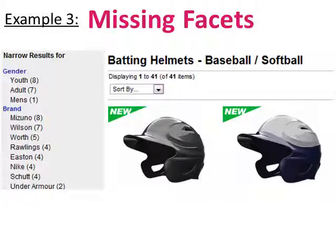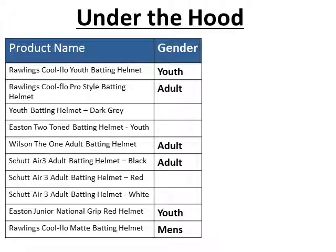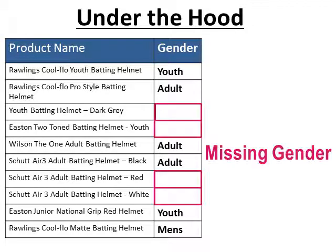In this search, you're getting 41 helmets, and they have facets to narrow your results — gender and brand. The gender facet, aside from mixing age with actual gender, is still very useful. But it doesn't add up: you've got 8 youth, 7 adult, 1 men's — but what are the other 25? Looking under the hood, they have a custom attribute for gender, but there are empty cells. We call this accounting for your attributes. You want to make sure that every product has a value for every attribute, or you risk preventing your customers from finding your products.